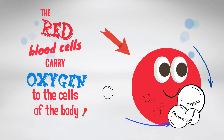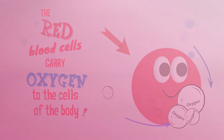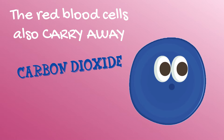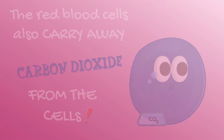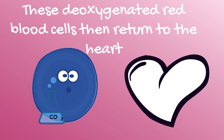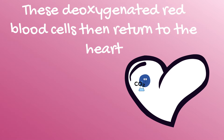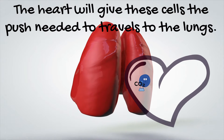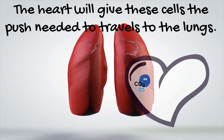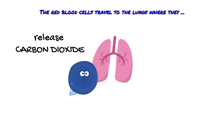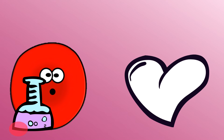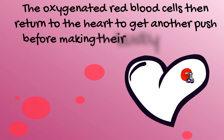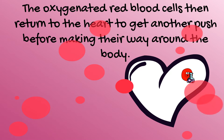The red blood cells carry oxygen to the cells of the body. The red blood cells also carry away carbon dioxide from the cells. The deoxygenated red blood cells then return to the heart. The heart will then give these cells the push needed to travel to the lungs. The red blood cells then travel to the lungs where they release their carbon dioxide and receive oxygen. The oxygenated red blood cells then return to the heart to get another push before making their way around the body.